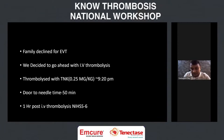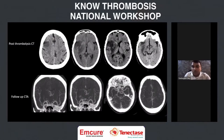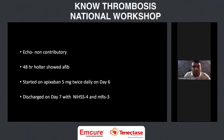One hour post IV thrombolysis, the NIHSS came down to 6 from 12. On the 24-hour post-thrombolysis CT scan, you can see established changes almost matching the MRI, including the early diffusion restriction in the basal ganglia region. Follow-up CTA showed complete recanalization with very good collaterals. Echocardiogram was non-contributory; 48-hour Holter showed atrial fibrillation. Apixaban 5 mg twice daily was started on day 6, and the patient was discharged on day 7 with NIHSS 4 and mRS 3.